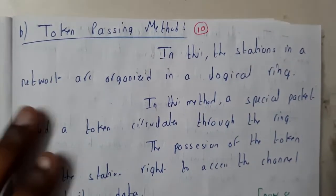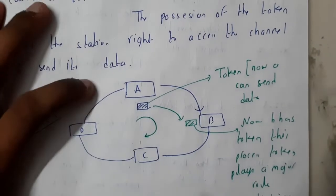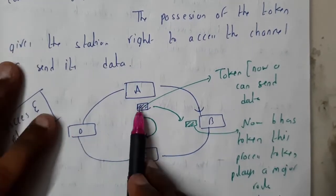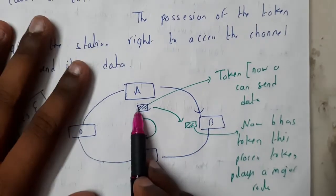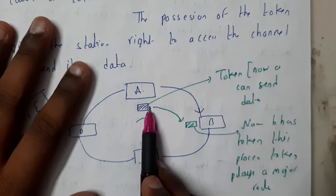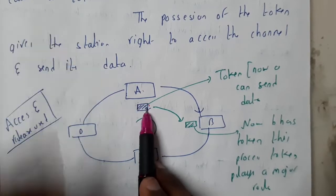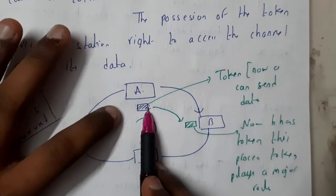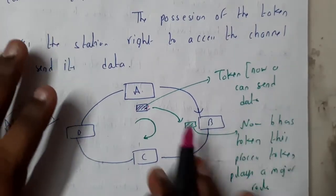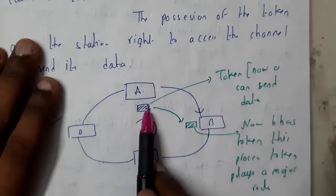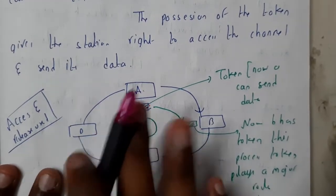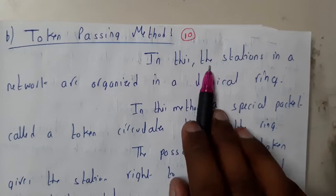Let us assume this is the diagram. When there are multiple devices which need to transfer the data, there will be a particular key. Whichever station or whichever device is having this key or token, that device can only send the data whereas other devices can receive the data. This token will be rotating in the clockwise direction from one device to the other device.